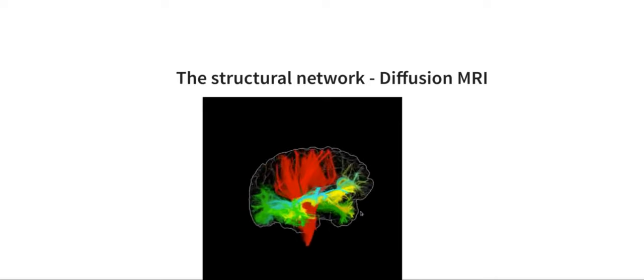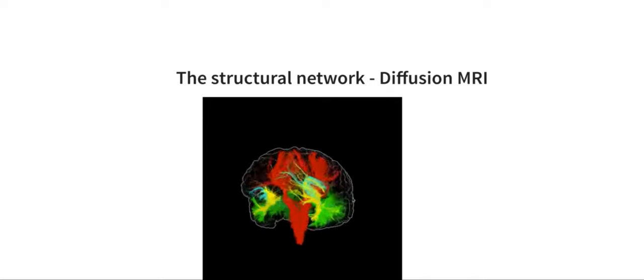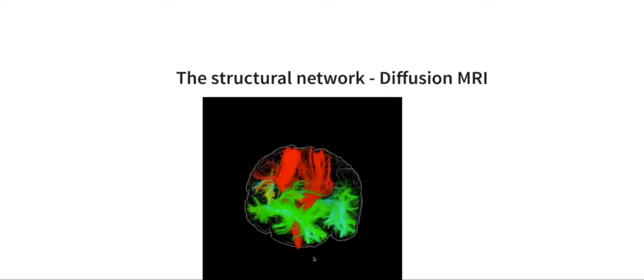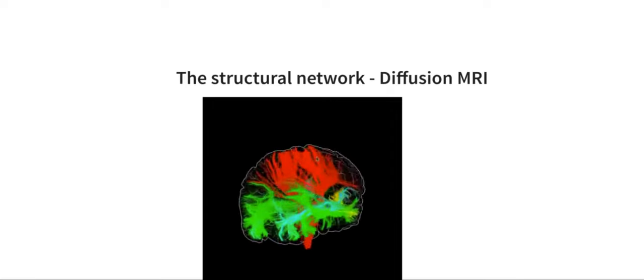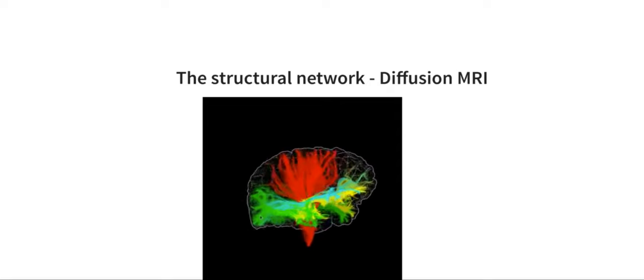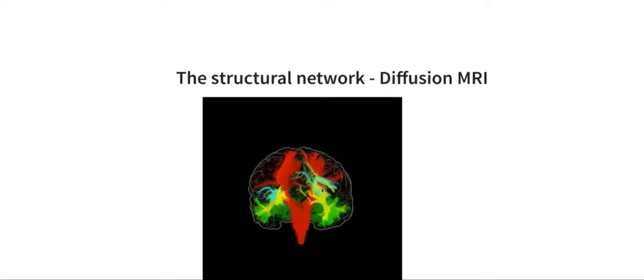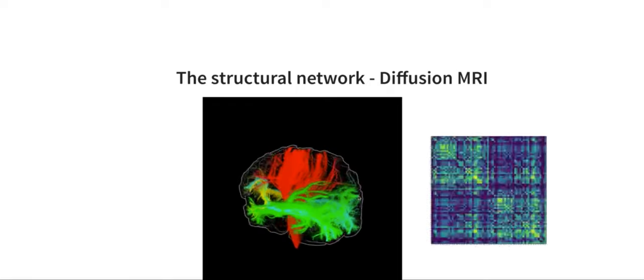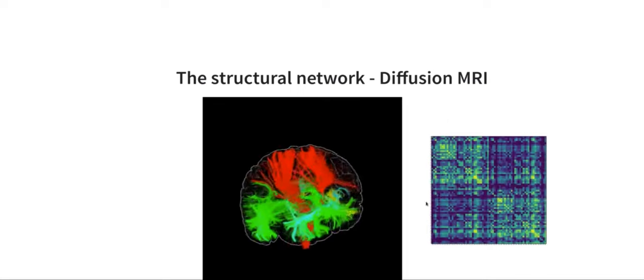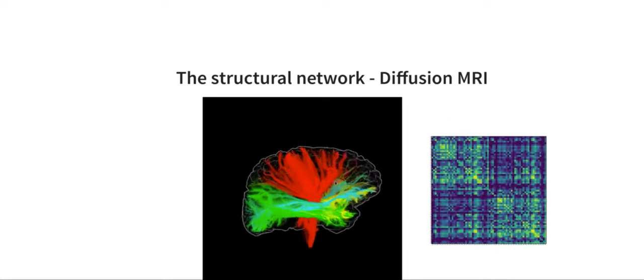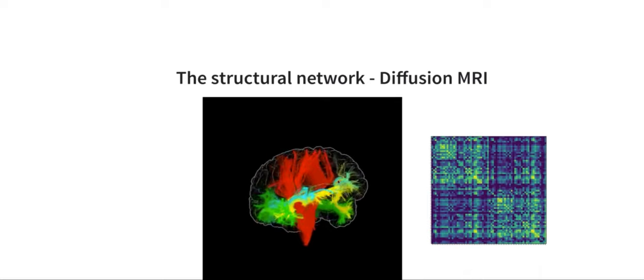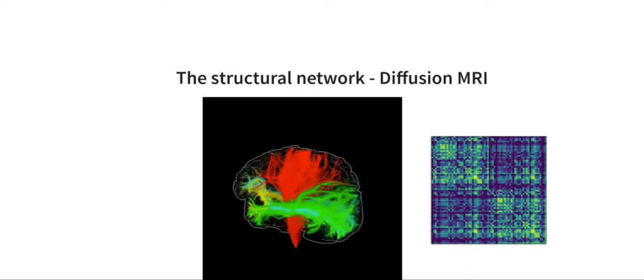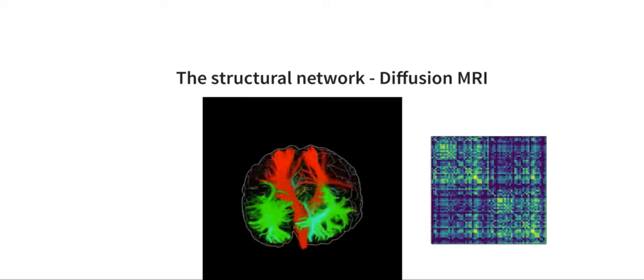If you were to show all of the streamlines that you get from this process, it would be a mess and you wouldn't be able to see anything. So here I've extracted a few of them of interest. In red, you're seeing the axons that connect the spinal cord on the bottom to the motor areas located in the superior part of the brain. We also see some streamlines in green that connect the occipital lobe to the temporal. You can do this for several pairs of regions and, in fact, for every pair of regions. If you do, you might end up with a matrix something that looks like this.